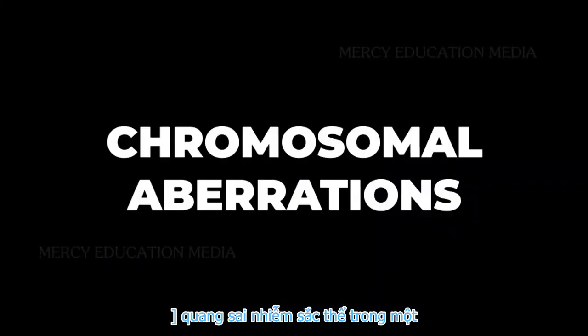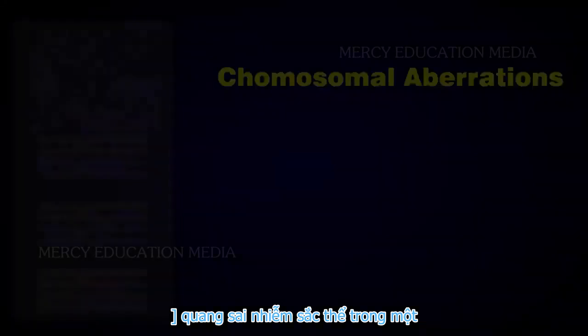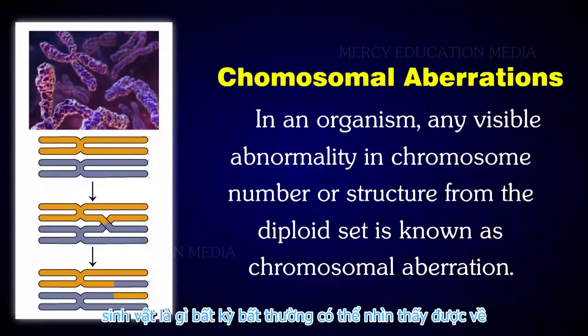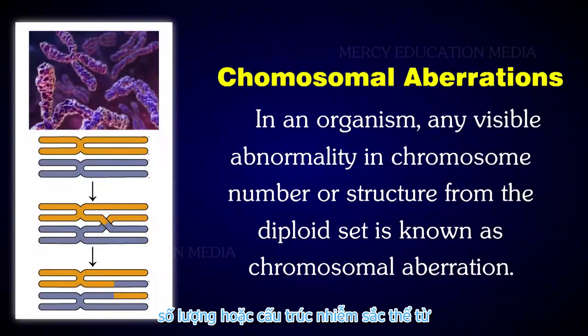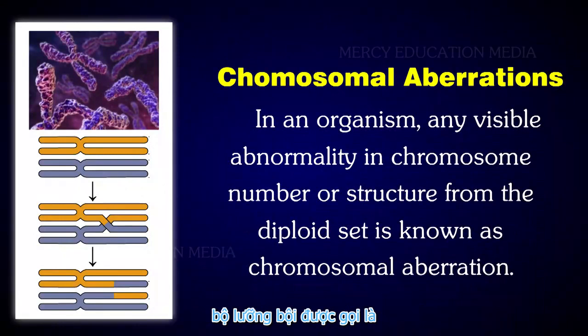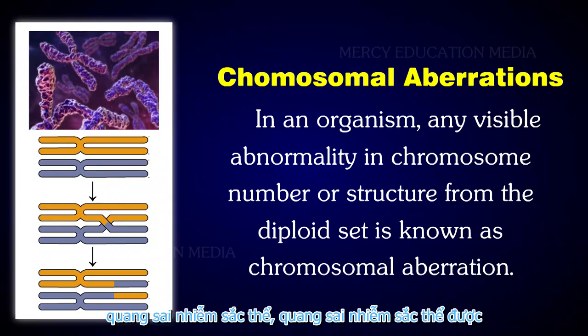What are chromosomal aberrations? In an organism, any visible abnormality in chromosome number or structure from the diploid set is known as chromosomal aberration.